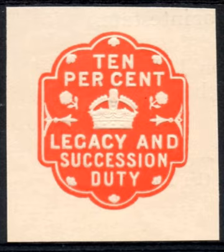If a citizen of State A owns registered bonds of a corporation chartered by State B, which he has put for safekeeping in a deposit vault in State C, his estate may have to pay four succession taxes: one to State A, to which he belongs and which by legal fiction is the seat of all his personal property; one to State B for permitting the transfer of the bonds to the legatees on the books of the corporation; one to State C for allowing them to be removed from the deposit vault for that purpose; and one to the United States.